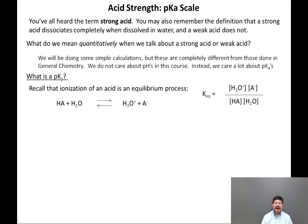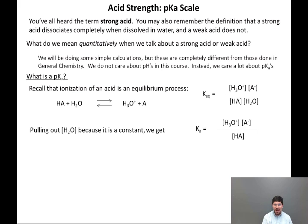However, the concentration of H2O is 55 molar. That's what it means to be water, and that is generally going to be much larger than the concentration of any acid. So we can pull out the concentration of H2O and call it a constant. Then we get the Ka expression, which simply has [H3O+][A-] over [HA].